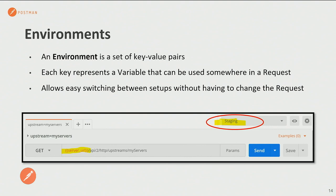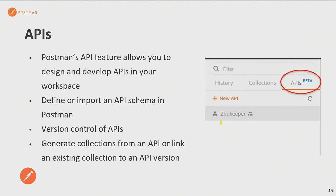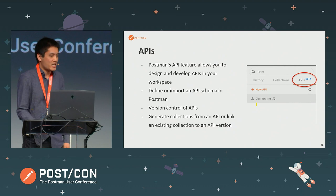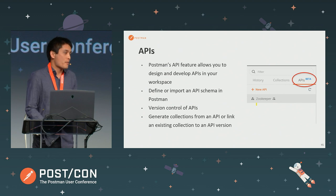Finally, we have an API feature. Postman's API feature allows you to design and develop APIs within your workspace. You can define or import an API schema, it gives you version control features on that schema, and you can generate collections from an API or link existing collections to an API version. We won't be looking at the API feature in this session — we're primarily going to be focusing on our requests, collections, and environments.